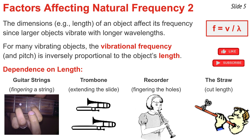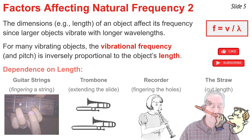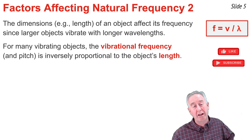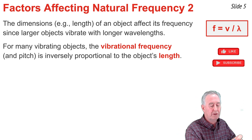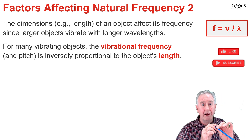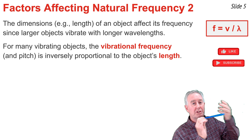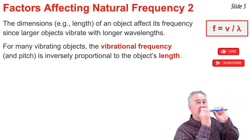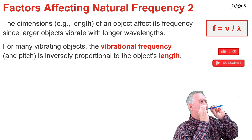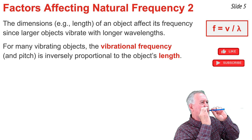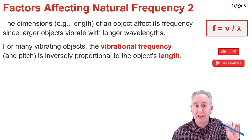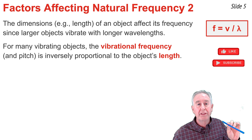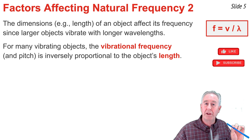As our last example, consider the plastic straw. I'm going to show you the principle behind this musical instrument. I take scissors and taper the end of the straw so it can vibrate as I blow air through it, then put my lips on the tapered end and blow. Quite musical indeed. I can affect the frequency by changing the length of the straw — as the length gets smaller and smaller, the frequencies get higher and higher.